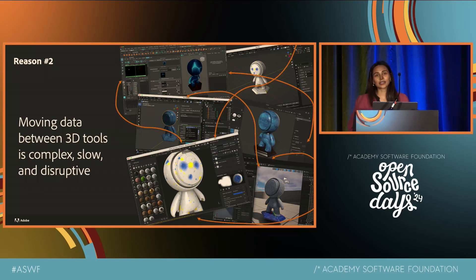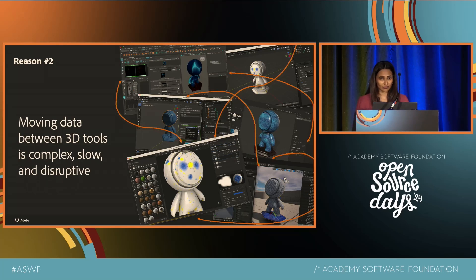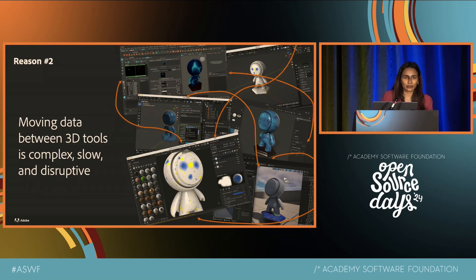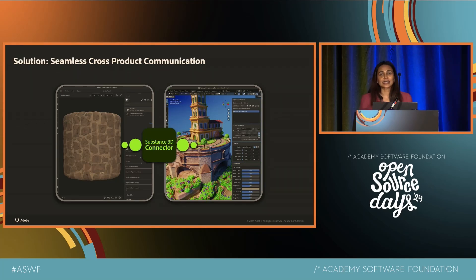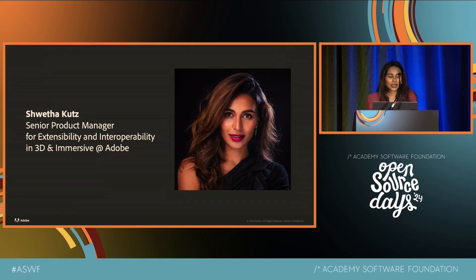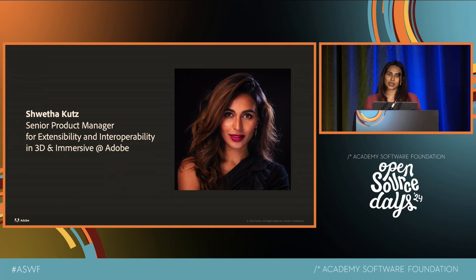In this talk, I'll be focusing on this second problem. Imagine trying to send a scene with dozens of models and hundreds of textures to a different application. You have to manually export and import all of these files and make sure they're all hooked up correctly. And if you want to make changes to the scene, you have to redo all of that all over again — which is extremely complex. To solve this problem, we have created Substance 3D Connector. My name is Shweta Kutz. I'm a Senior Product Manager at Adobe, focused on extensibility and interoperability, which includes Substance 3D Connector.